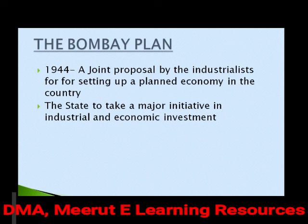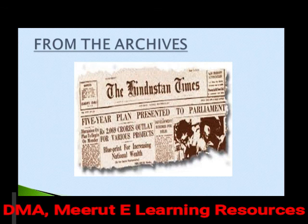In 1944, a joint proposal was initiated by industrialists who settled for a planned economy. Long before independence, in Bombay, industrialists decided the state should take up the initiative of industrial and economic development and investment, since money in private hands was limited to roughly 10 to 15% of the population. The onus for development had to be taken by the government, expecting a mixture of capitalist and communist models. The initial five-year plan was presented with a ₹2,069 crore outlay.